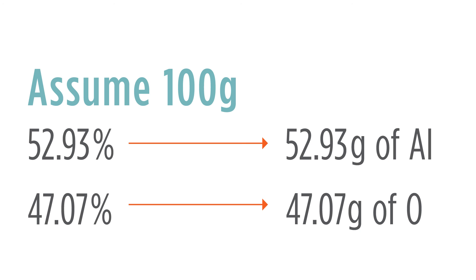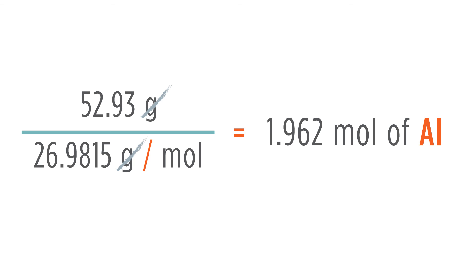Once we've converted it to grams, now we can use our molecular weights for aluminum and oxygen to convert this into moles. So we'll take 52.93 grams of aluminum and divide it by the molecular weight of aluminum, 26.9815 grams per mole. Our grams will cancel, giving us 1.962 moles of aluminum.